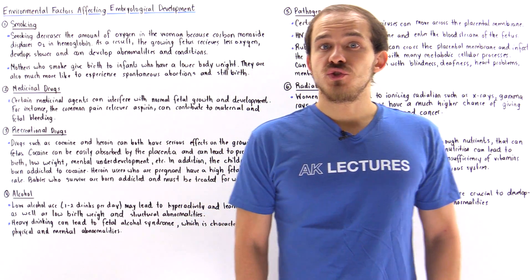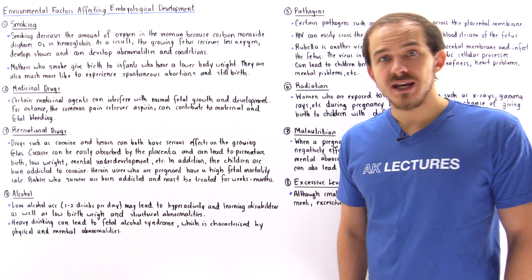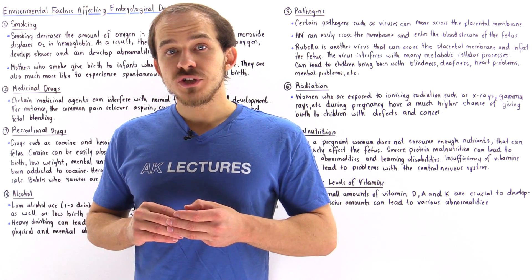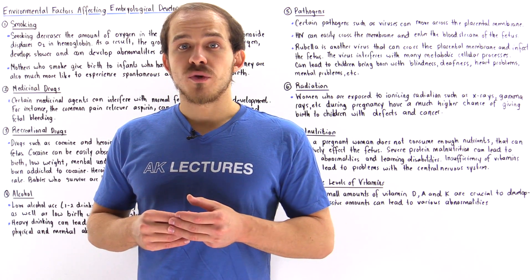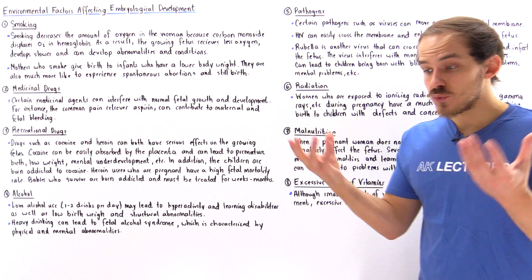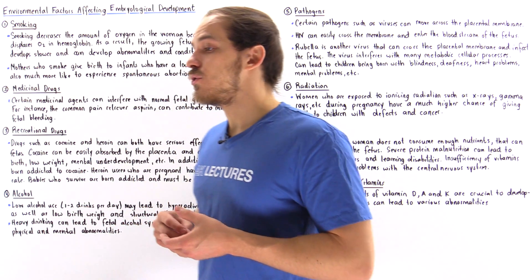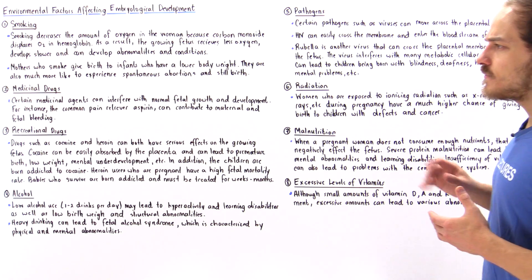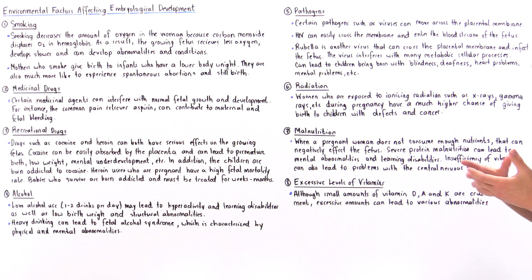Once a woman becomes pregnant, she is no longer only responsible for her own body but is now responsible for the body of that developing fetus. That's precisely why she must take a great deal of caution with the things she eats, ingests, and drinks, with the people she interacts with and the places she visits, because there are many different types of factors in our surrounding environment that can have a negative impact on the way that fetus develops. In this lecture, we're going to briefly discuss eight different categories of factors that can have a negative impact on that developing fetus.